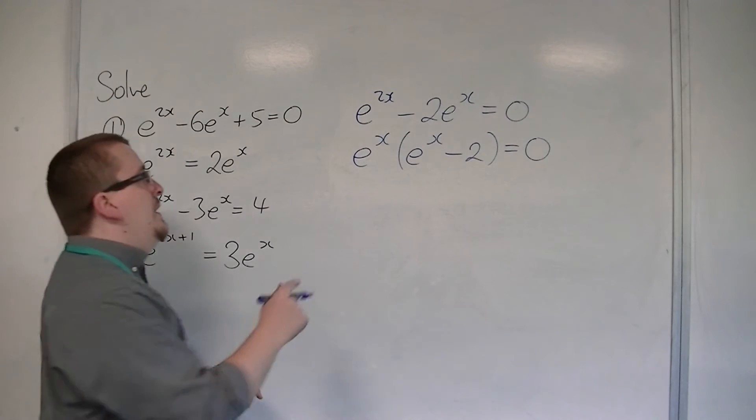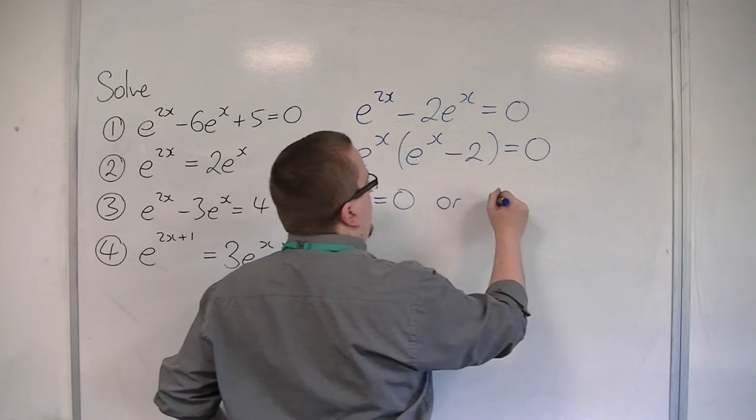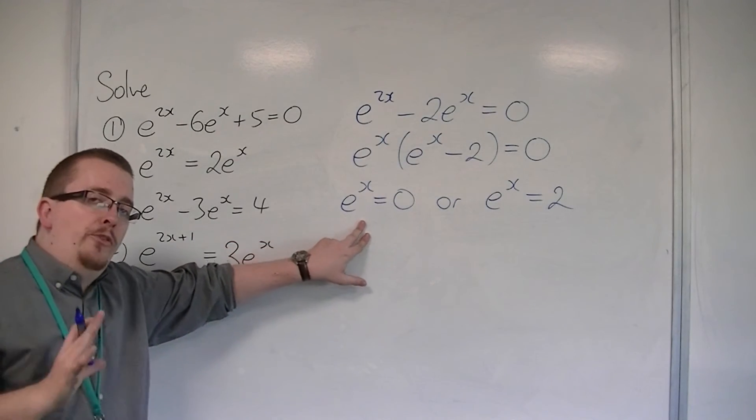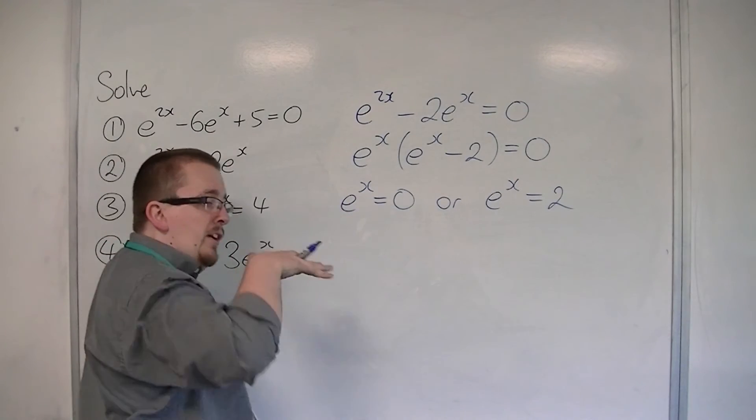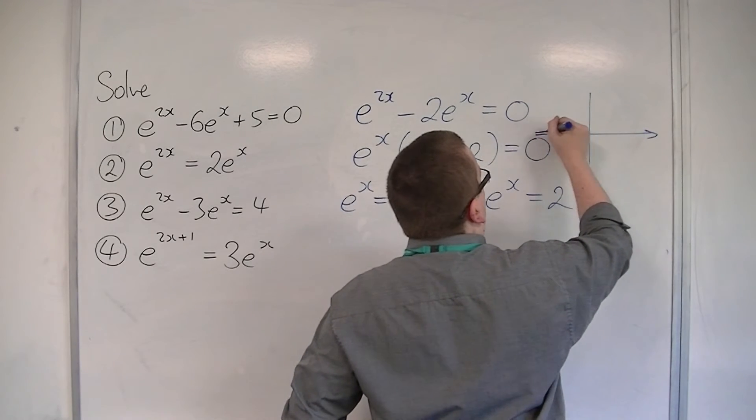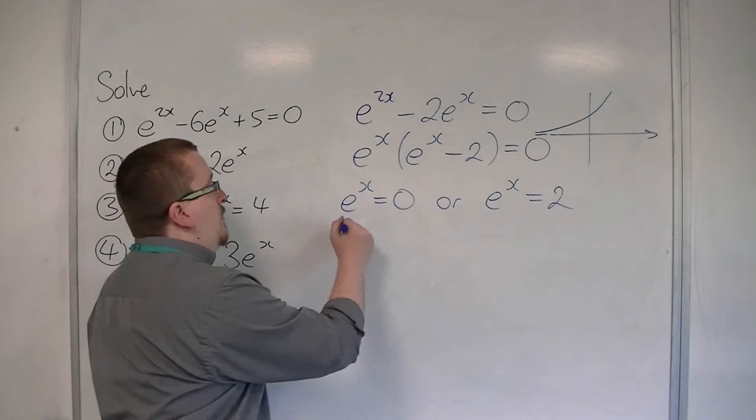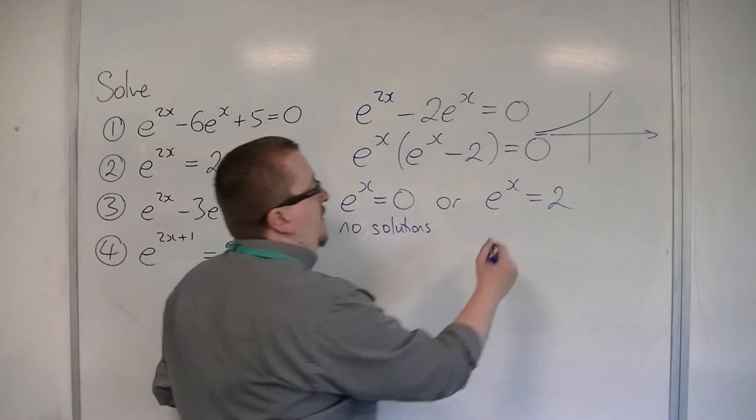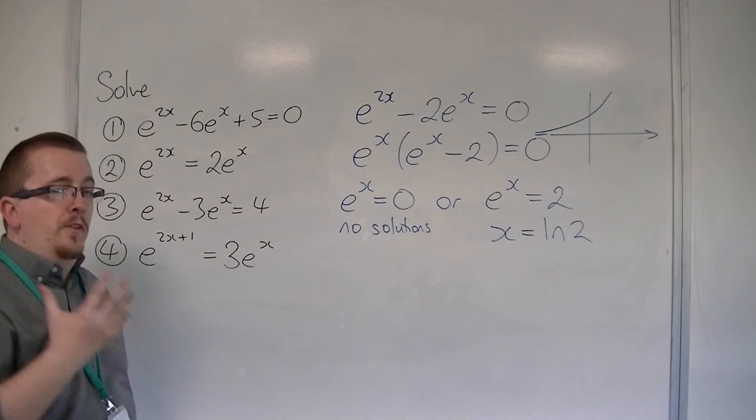Now that means that either e to the x is 0 or e to the x is equal to 2. However, e to the x equals 0 has no solutions, because at no point does the graph of y equals e to the x touch the x-axis. If you sketch y equals e to the x, there is no point where it crosses the x-axis, and so there are no solutions to this equation. So the only solution would be x is log 2, and that's how we can solve number 2.